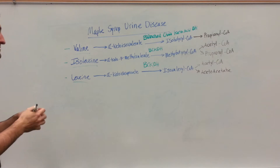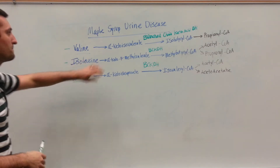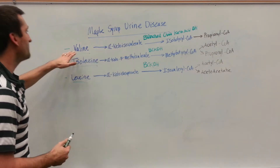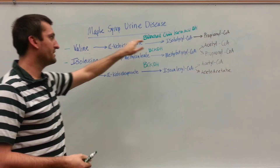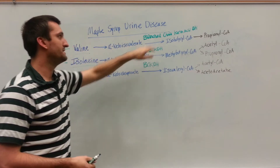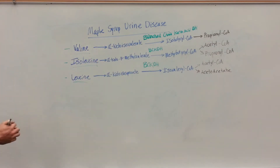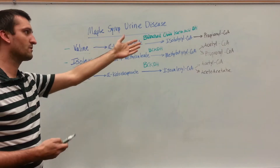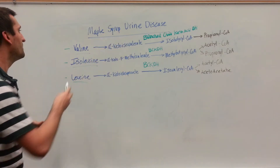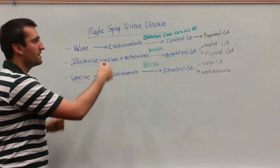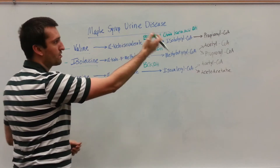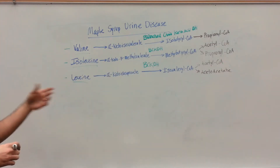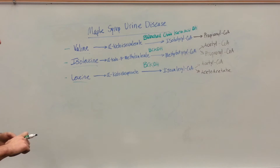So that's the enzyme that's going to be required. Valine is going to be broken down by this BCKDH enzyme, and that's going to result in a propionyl-CoA. That propionyl-CoA is then going to be used by the body in other pathways.